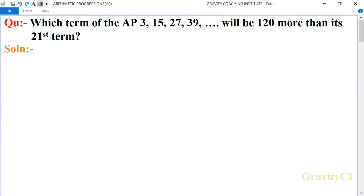Chapter: Arithmetic Progressions. Question: Which term of the AP 3, 15, 27, 39... will be 120 more than its 21st term?